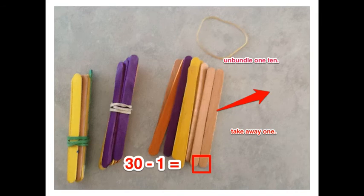With the 3 tens left, I unbundle one 10 so that I can take 1 away. So now my second part of my problem is 30 take away 1 equals what?